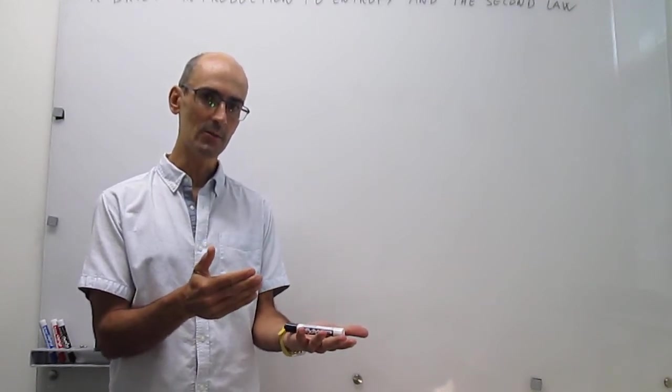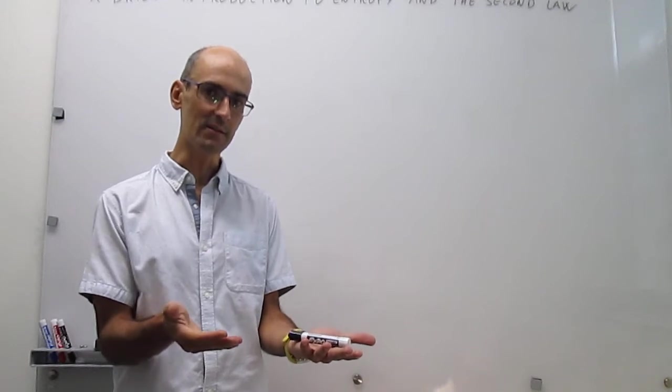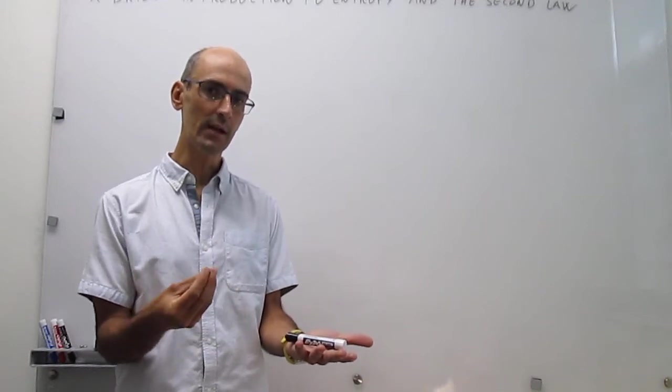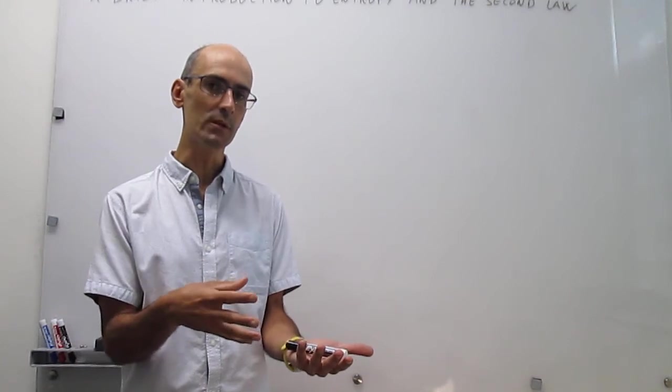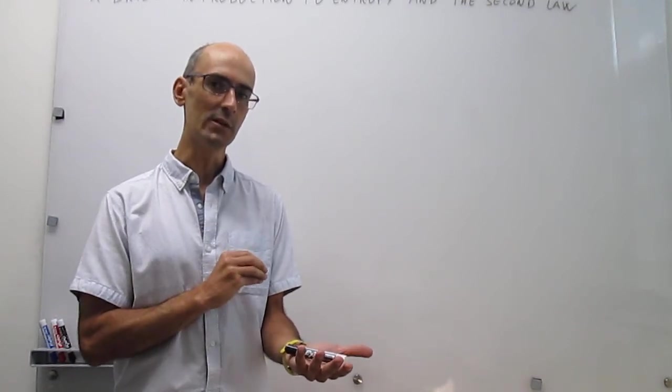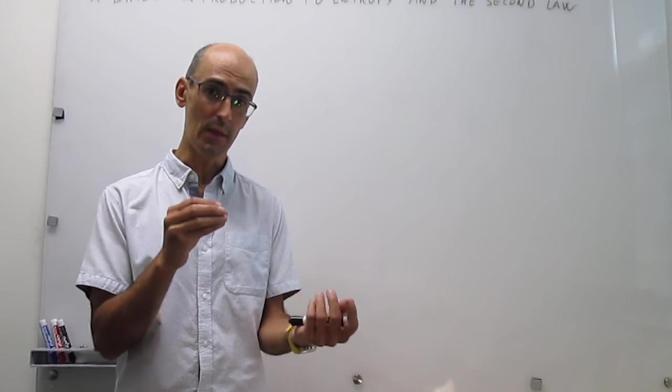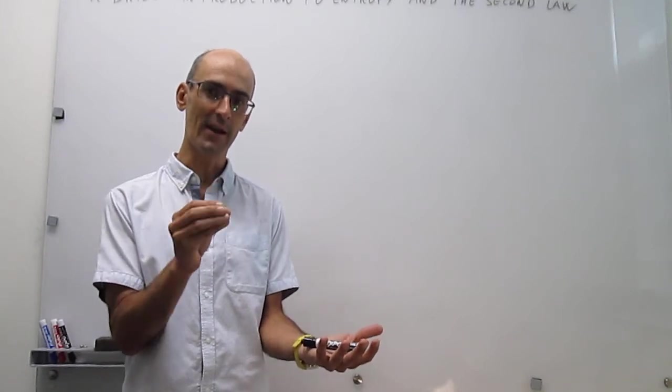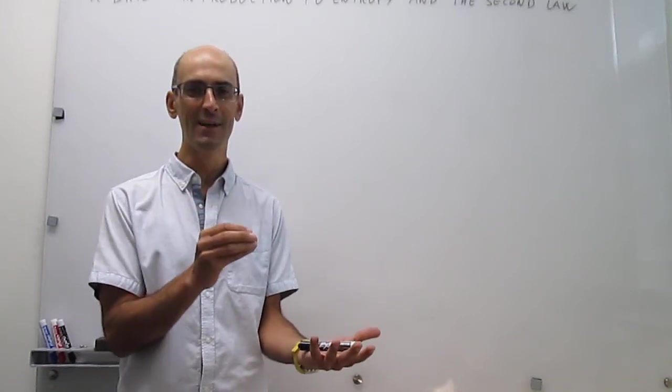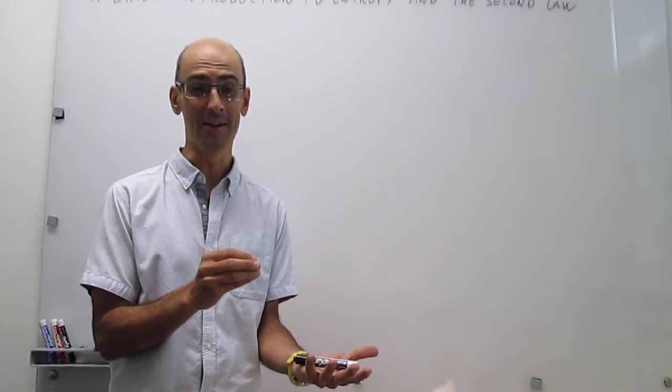It turns out that that spontaneity is connected to entropy and we can actually, if we're able to calculate the change in entropy, we can use the change in entropy to determine that the process from my right hand to the left hand is spontaneous and the reverse process is not spontaneous.